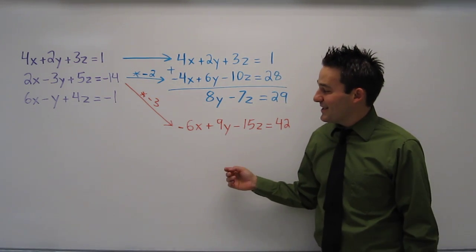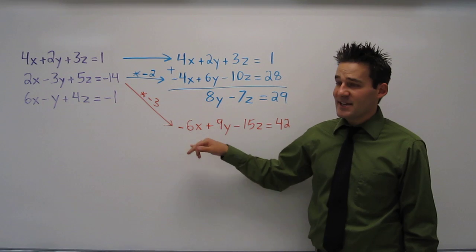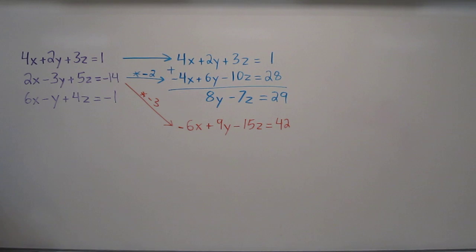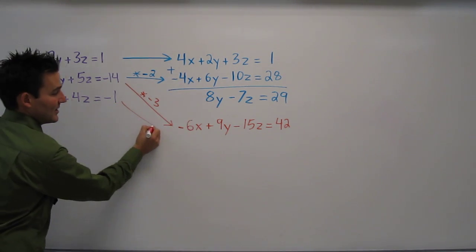Now the reason I did that is because now negative 6x is an opposite coefficient to 6x. So I'm going to rewrite the third equation. I'm not going to do anything to it.